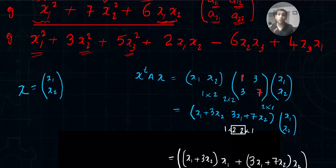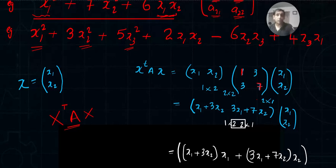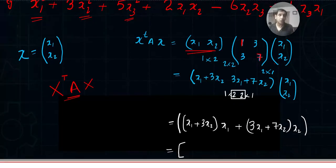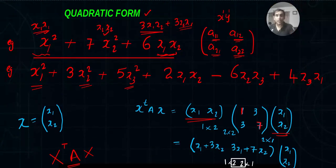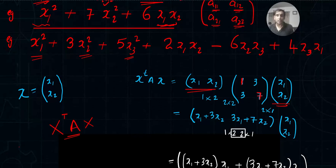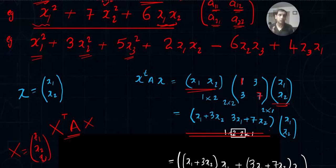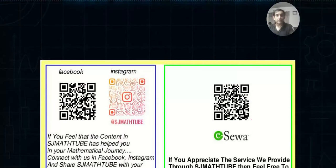Every quadratic form can be converted into matrix form using the formula Q = x^T A x, where A is called the matrix of the quadratic form — for example the matrix with entries 1, 3, 3, 7. If you multiply x^T A x out, you recover the original quadratic form. For a three-variable quadratic form, x will be the column vector [x1, x2, x3]^T. You can pause and verify the multiplication.